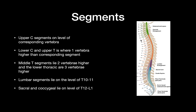The upper cervical segments are on the same level of the vertebra. The lower cervical and upper thoracic are one vertebra higher than the corresponding segments. The middle thoracic segments lie two vertebrae higher. The lower thoracic are three vertebrae higher than the segments. The lumbar segments lie at about T10 to T12, and the sacral and coccygeal lie at the level of T12 to L1.